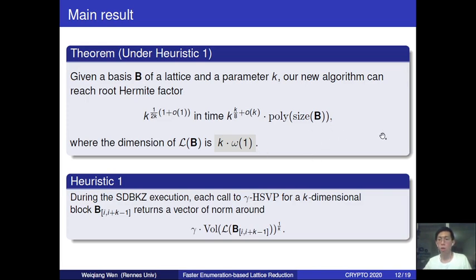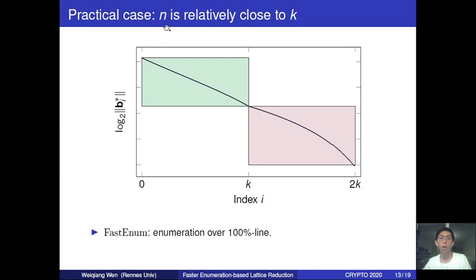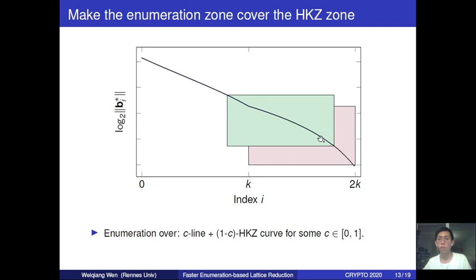Note that for each iteration, we work over a lattice with dimension roughly k larger than before. With O(log k) iterations, the overall dimension needs to be roughly O(log k) times larger than k. But this is not satisfiable for cryptanalysis of lattice-based cryptosystems like NTRU candidates, where the dimension n needs to be relatively close to k (e.g., n/k is constant). So instead of enumerating over 100% of the straight line, we propose a new practical variant where the enumeration zone also covers the HKZ region—enumerating over a combination of the straight line and part of the HKZ curve.